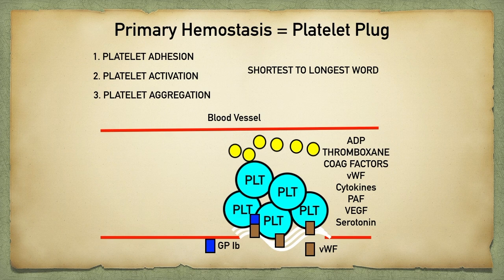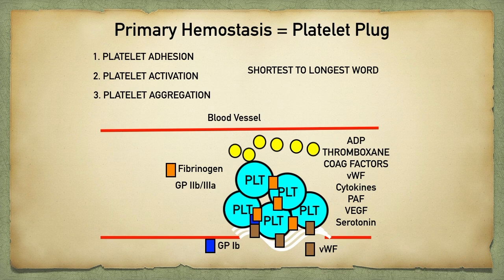Now these platelets are starting to clump together, but they have to aggregate and bind to each other somehow — this is where platelet aggregation comes into play. During platelet activation, the platelets change form and shape and also express a glycoprotein 2b3a receptor. This receptor binds a glycoprotein called fibrinogen, which serves to cross-link the platelets together to further solidify and strengthen that platelet plug. This is called platelet aggregation.